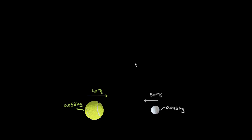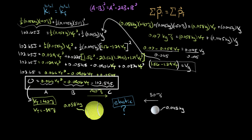If you powered through the last video, you saw that these elastic collision problems can get pretty nasty — the algebra gets pretty ugly. What we did, if you missed it, is that we used conservation of momentum, but we had two unknown final velocities.